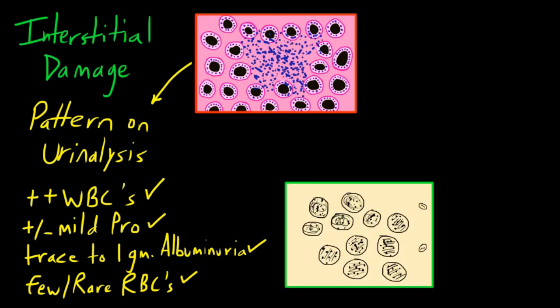On urine microscopy, you'd see many white blood cells. They are large, well-demarcated cells, and you can actually see the granules inside — especially if there are many neutrophils. For comparison, they're larger than a red blood cell. I tell people they sort of look like oatmeal raisin cookies based on their size and general roundness. If you see many of them, that can be a sign of interstitial nephritis.